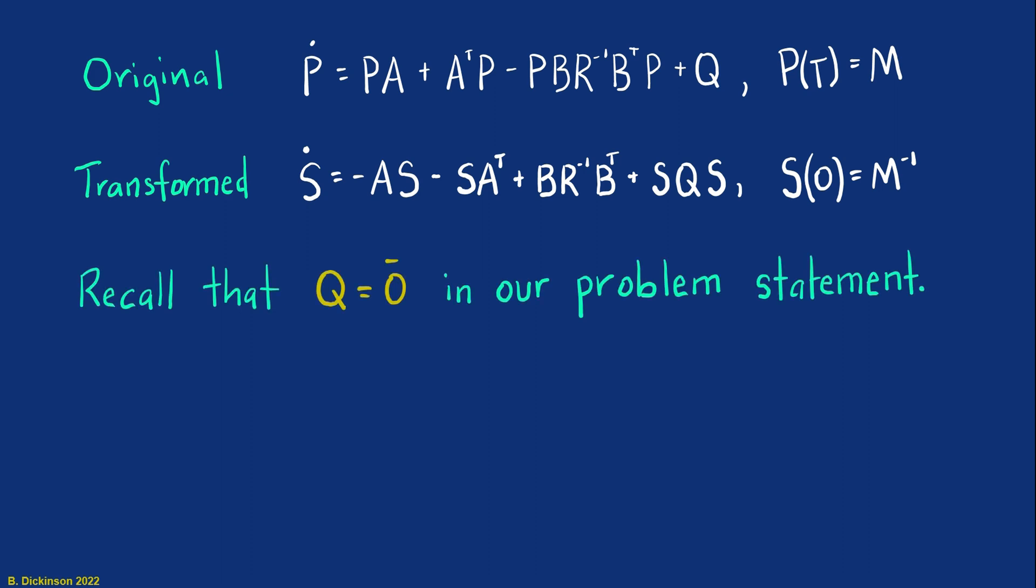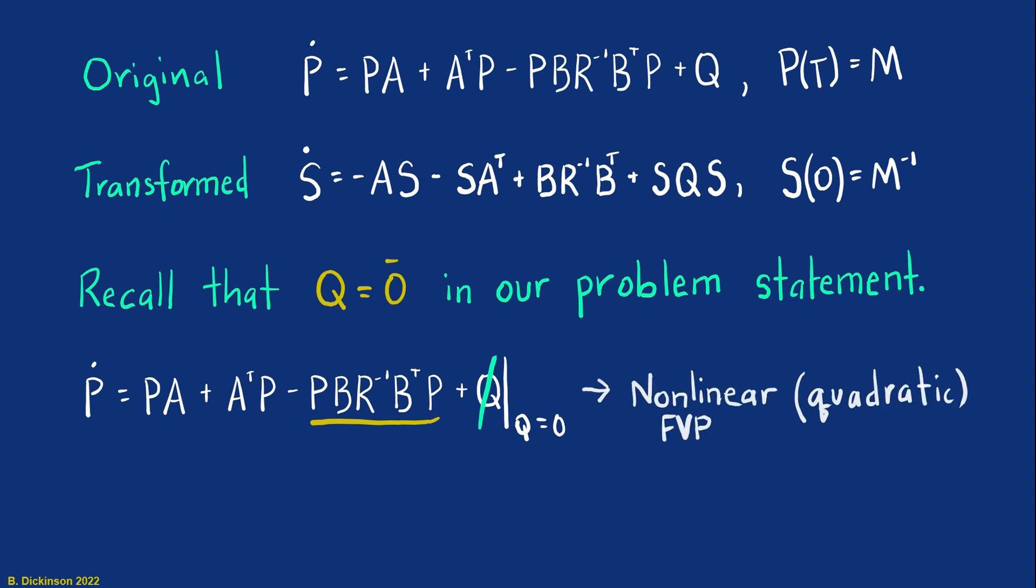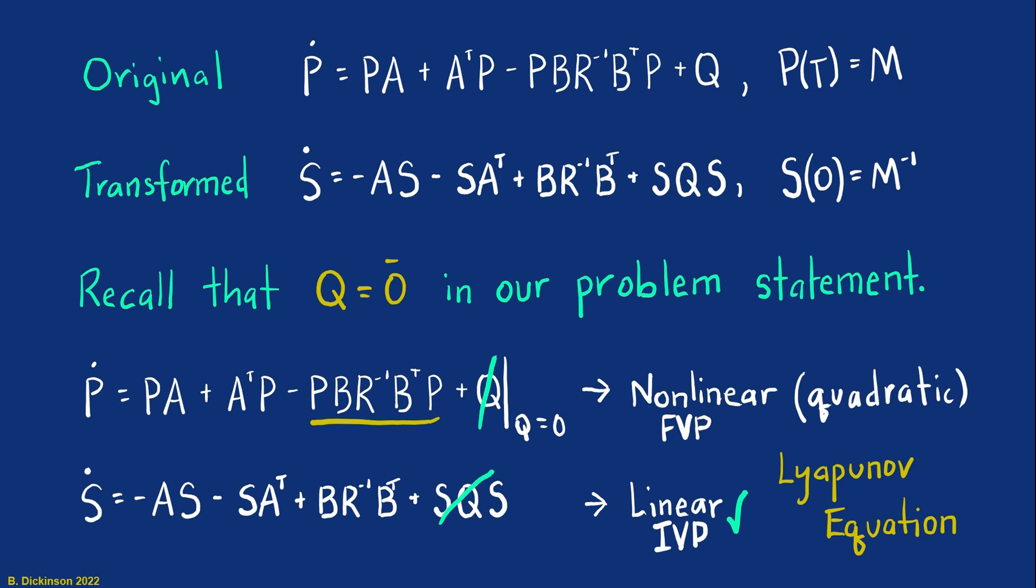Well, recall that in our problem statement, the control penalty was non-existent. Remember, X transpose QX is the control penalty term in the integral. And we didn't have that term. So Q, the Q matrix, is a bunch of zeros. Knowing that and substituting that into the Riccati equation, we still are left with this non-linearity. And it's a final value problem. But going to time to go and then transforming in terms of S, notice where that non-linearity is now. It's in the last term associated with the Q matrix. And since Q is zero, we now have a linear initial value problem. And no longer a Riccati equation, but something called a Lyapunov equation. This is what we're going to use to solve our engagement optimization problem statement.